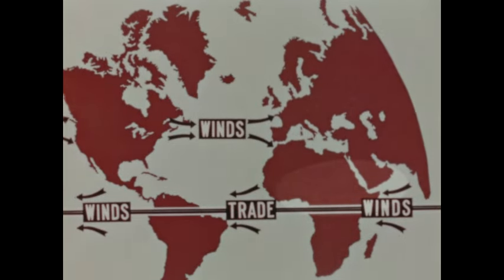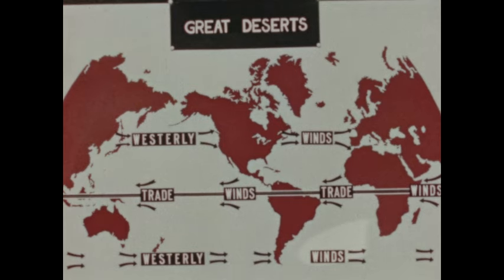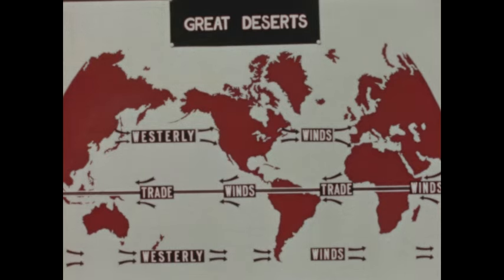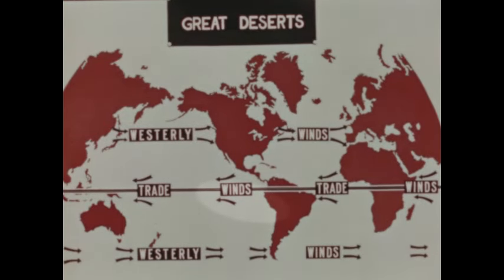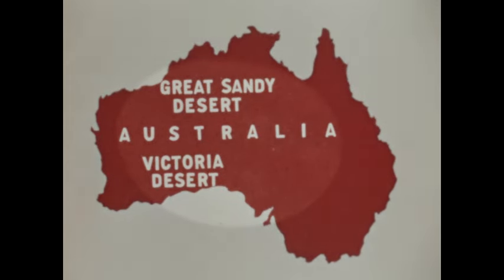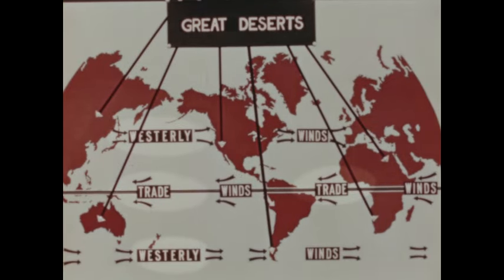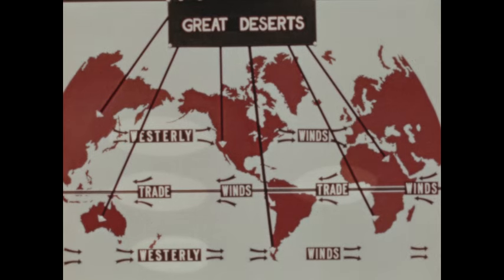In northern Africa and Arabia, the trade winds produce vast desert areas. South of the equator there are desert regions in southwest Africa. As the trade winds cross South America they help to create a narrow coastal strip of desert land in Chile. And far across the Pacific there are the hot dry regions of central Australia — the Great Sandy Desert and the Victoria Desert. We find great deserts of the world where trades blow and where westerlies take up moisture from the land, and there are many smaller deserts, the product of winds and mountain ranges.